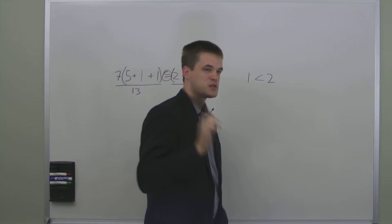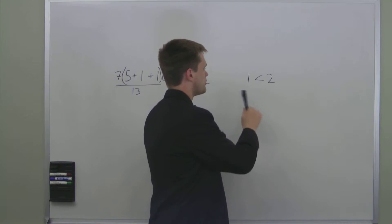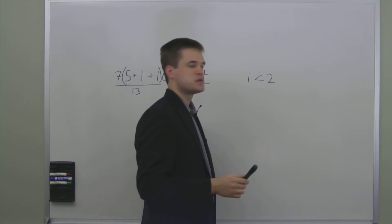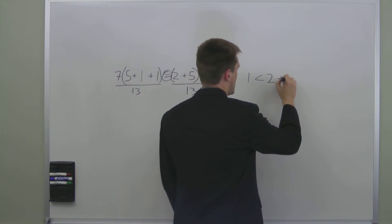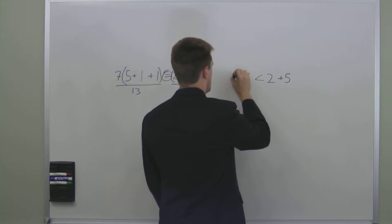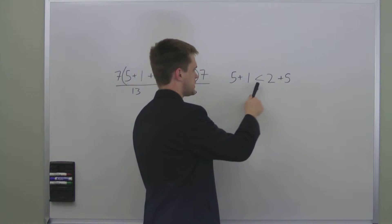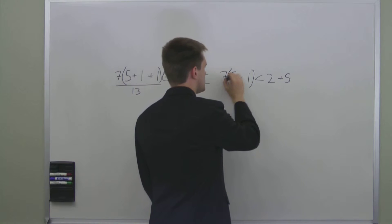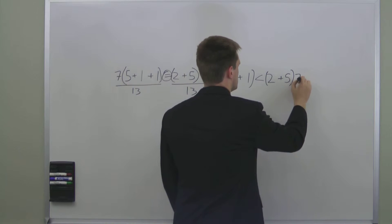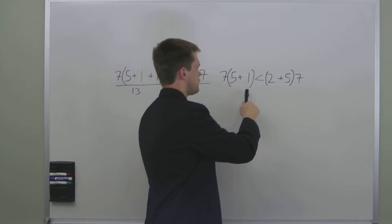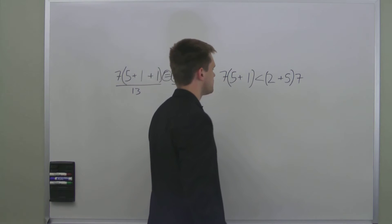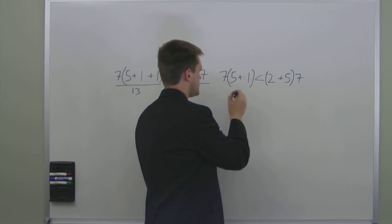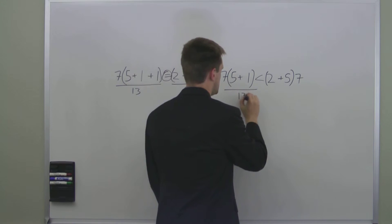Similar to equations, we can perform the same operations on both sides of the inequality sign and it can remain true. Again, we can add 5 to both sides and it's still true. 6 is still less than 7. We can multiply both sides by 7 and it's still true. This side is now 42 and this one equals 49, so it's still true. And we could divide it by 13 and it's still true.